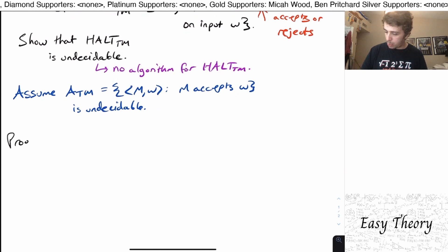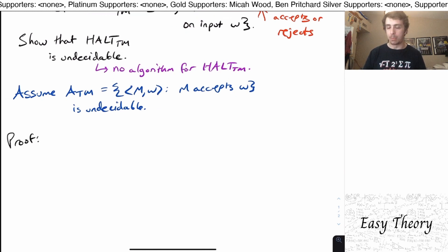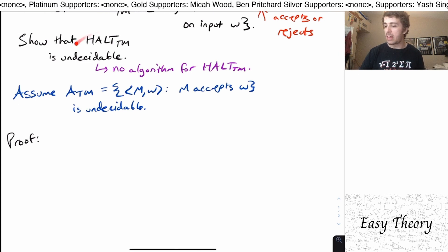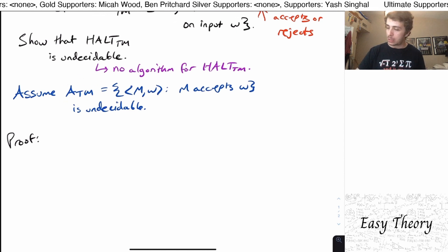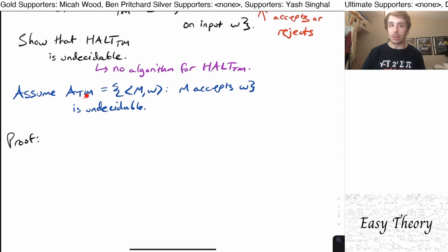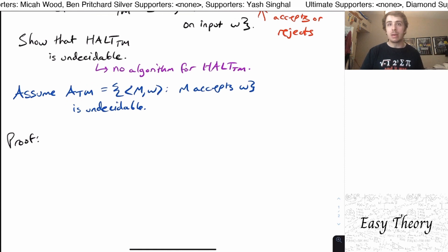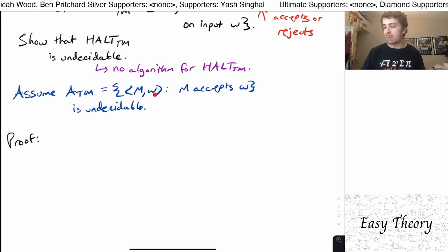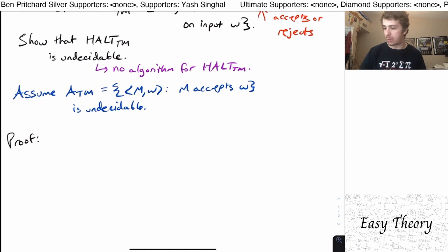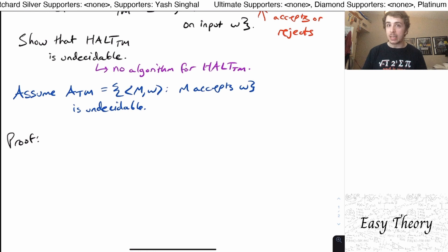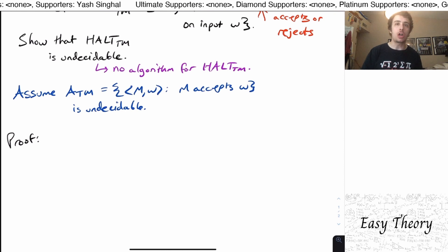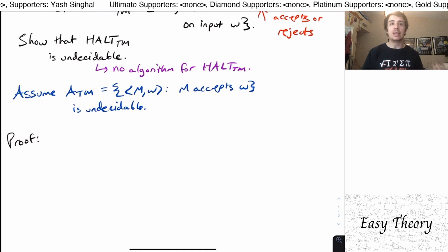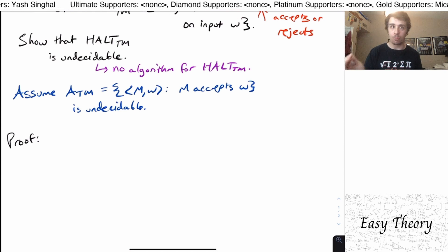So here's what we're going to do here. So how do we prove this, that halt TM is undecidable? Well, we want to assume that it is decidable, then under that assumption, make a decider for ATM. So the problem with ATM and showing that it's decidable is the easiest way to do it is just to run the machine M on W, but the Turing machine could run forever. So what we can do here is, if we had a way to figure out whether the machine halts on the input W to start with, then we can decide what actually happens on input W with M on W.